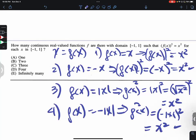And now the answer of this is four. There are four functions, four real-valued functions in the domain from negative one to one, such that f of x to the second power equals x squared. And this is the answer, D.